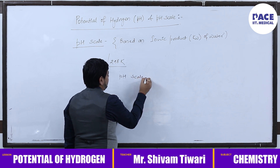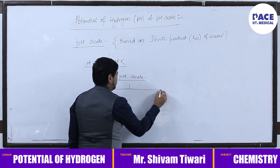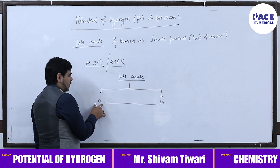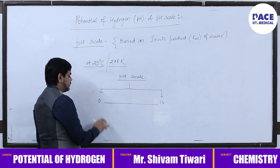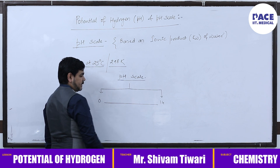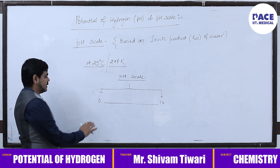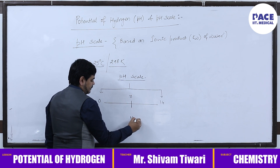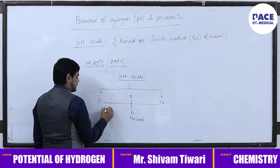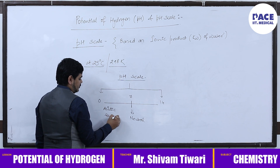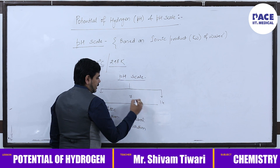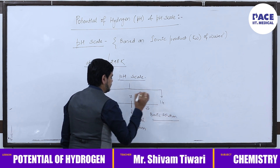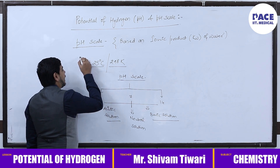pH 0 means it is going to be strongly acidic; pH 14 means it is going to be strongly basic. As we change from 0 toward 14, the concentration is going to decrease and the pH is going to increase. At pH equals 7, that is going to be neutral. So 0 to 7 is acidic solution, 7 is neutral, and 7 to 14 is basic solution.